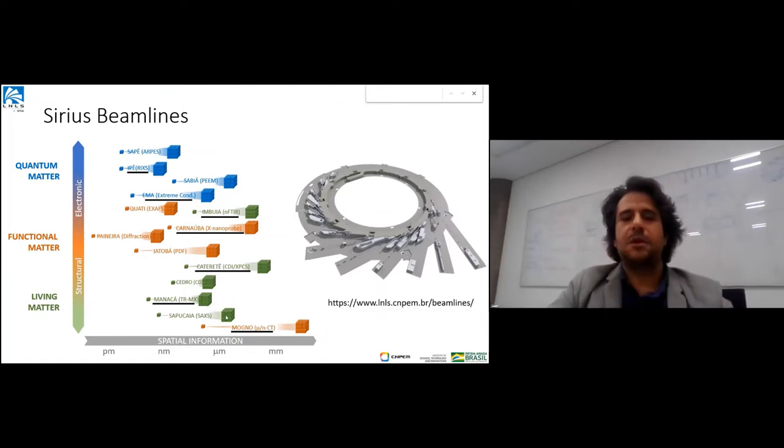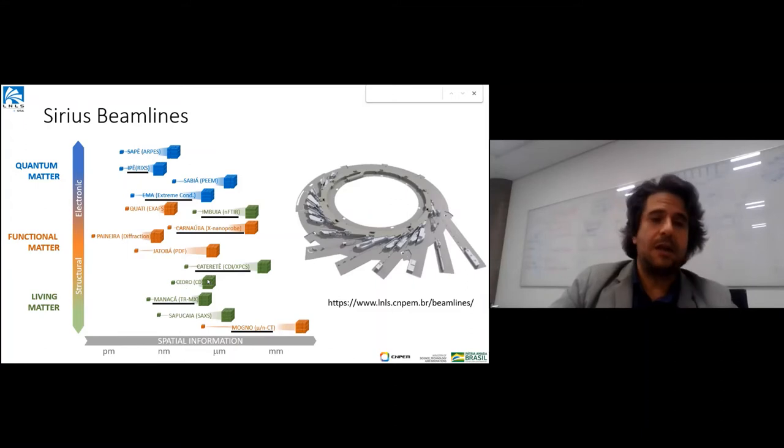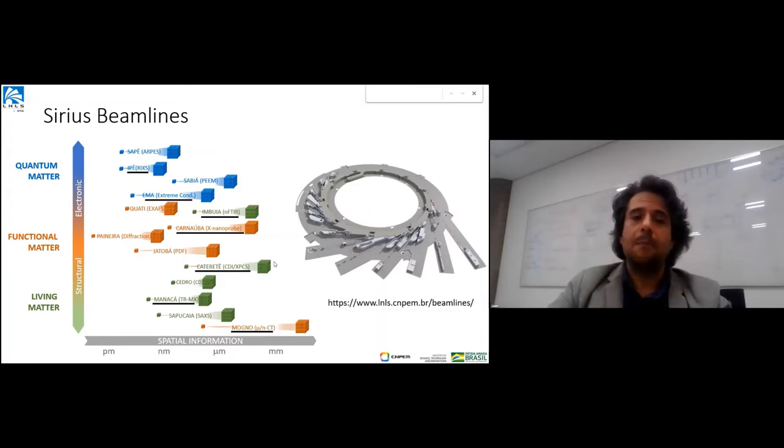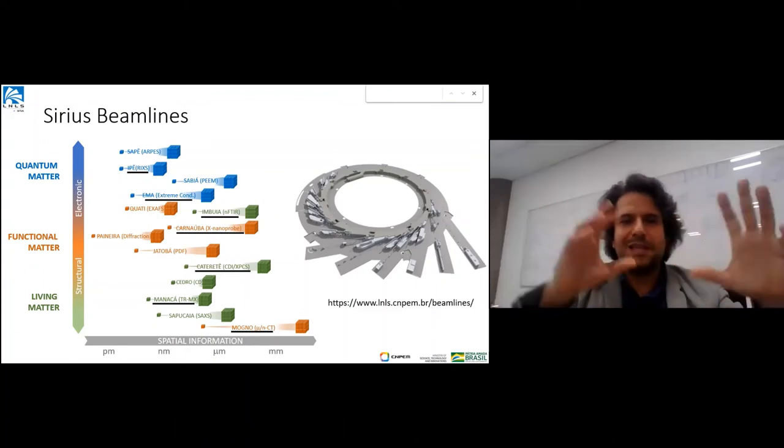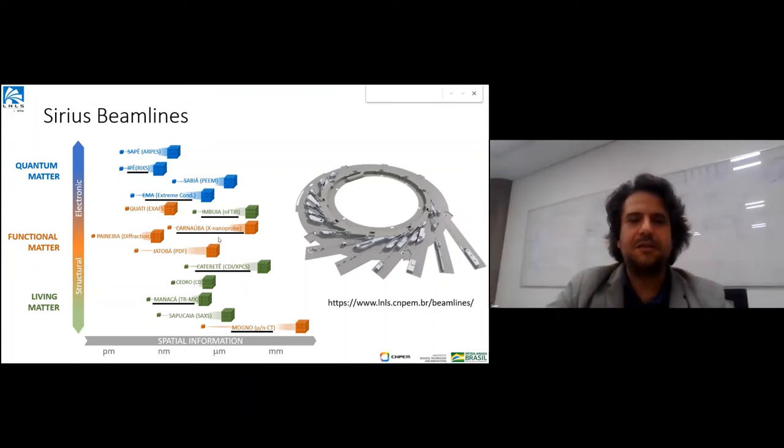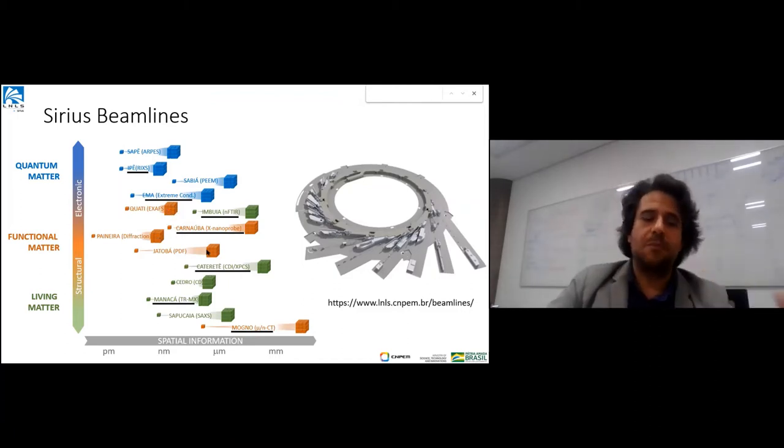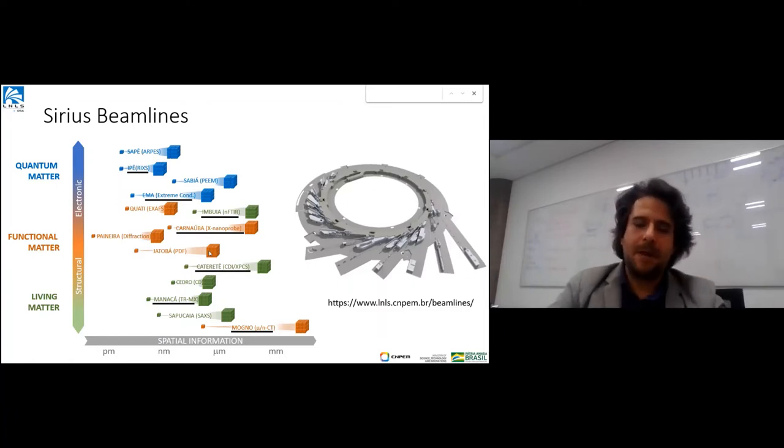For biological or living matter, we have traditional protein crystallography and circular dichroism, but also CDI, XPCS, and nano-FTIR. For functional materials or heterogeneous hierarchical matter, we have a broad range from XAFS to diffraction to nanoprobe and pair distribution function from diffraction.